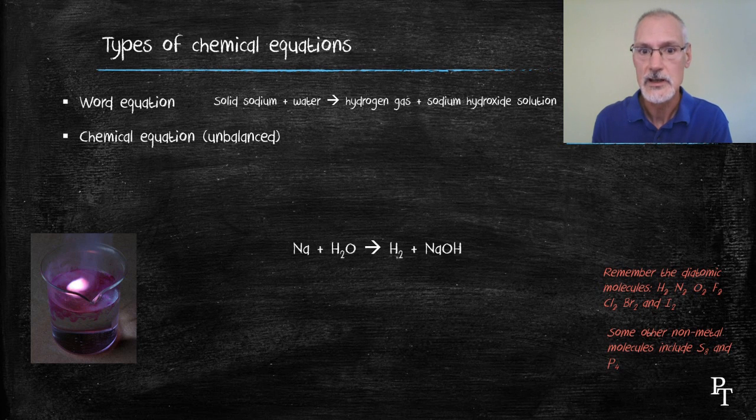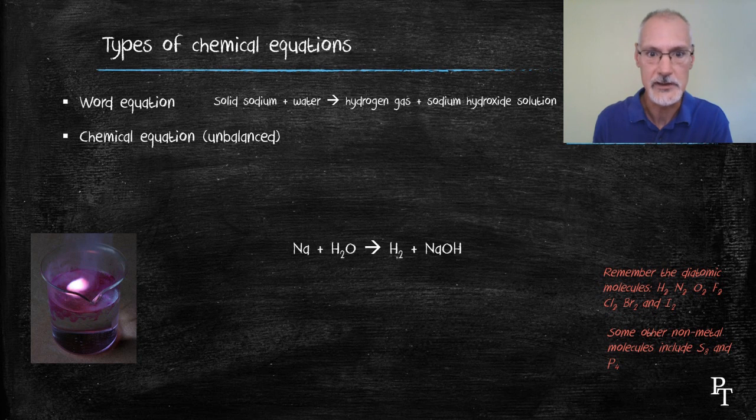Don't forget there's other substances that like to exist in pairs or are diatomic. H2, N2, O2, and all the members of the halogens also like to be diatomic in nature. Sulfur makes a ring of 8 sulfur atoms, hence S8, and phosphorus a square of 4, P4.